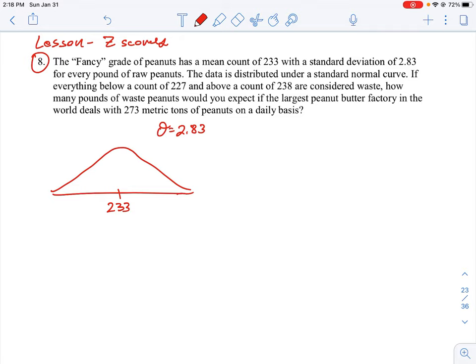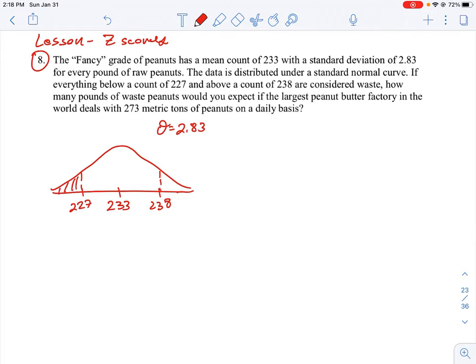The data is distributed normally, and everything below a count of 227 and everything above a count of 238 are considered waste. So the parts below here are waste, and the part in the middle is the acceptable part.